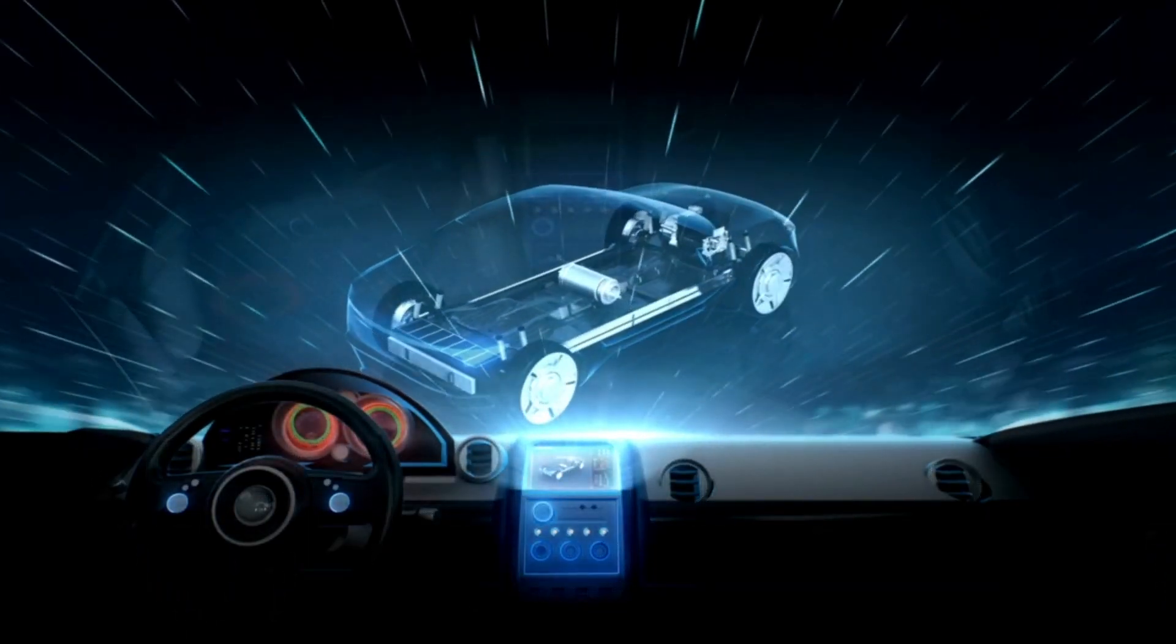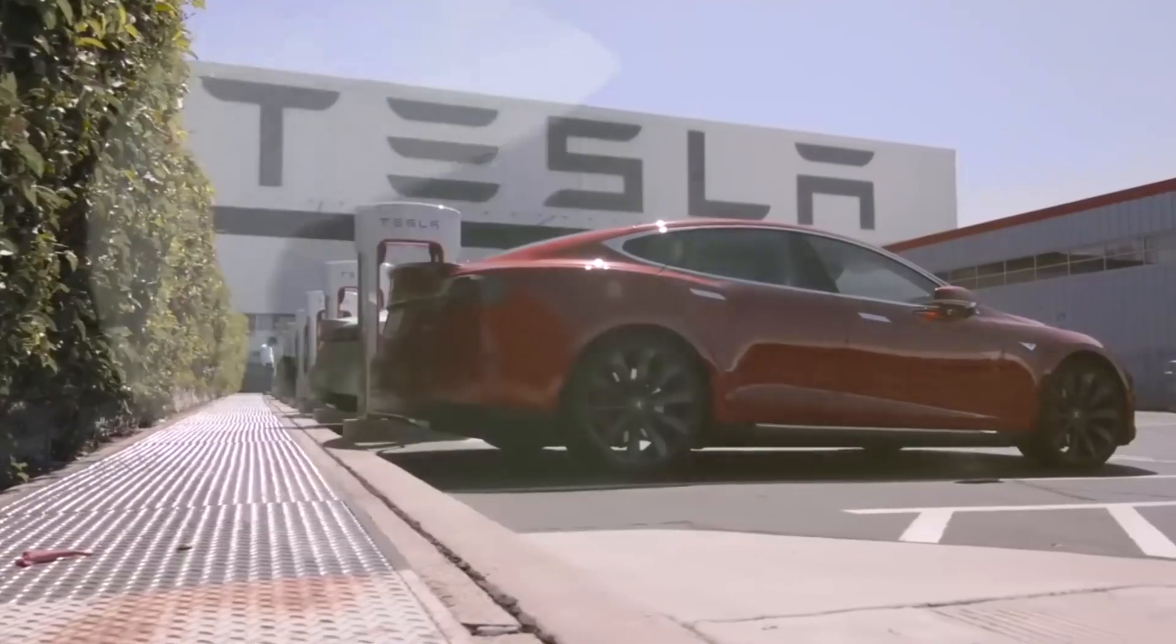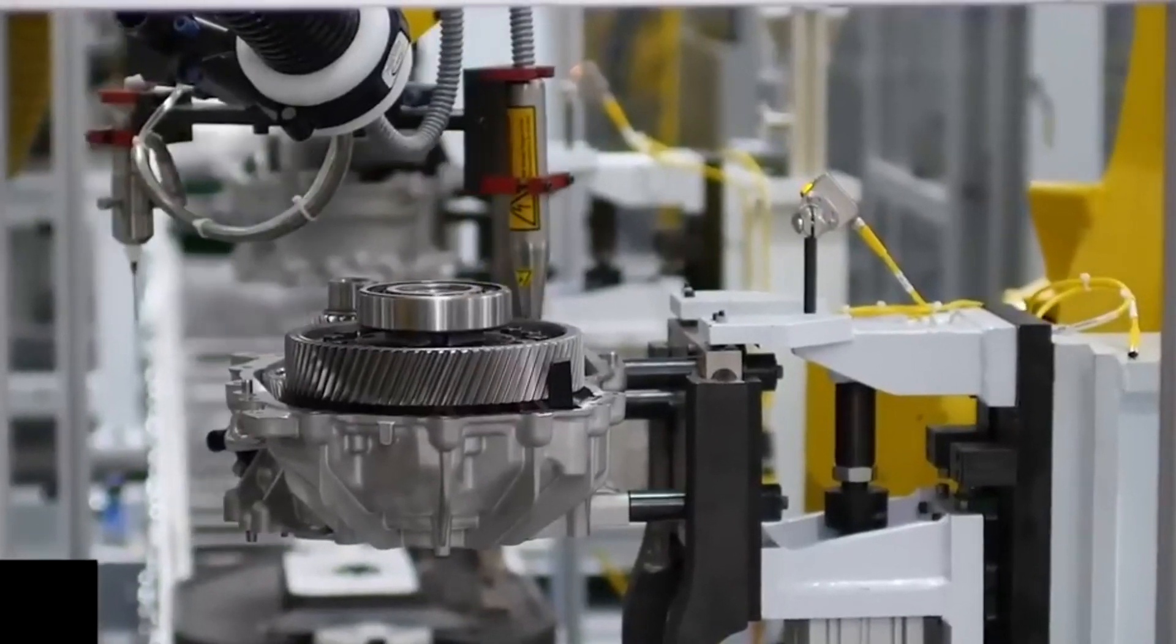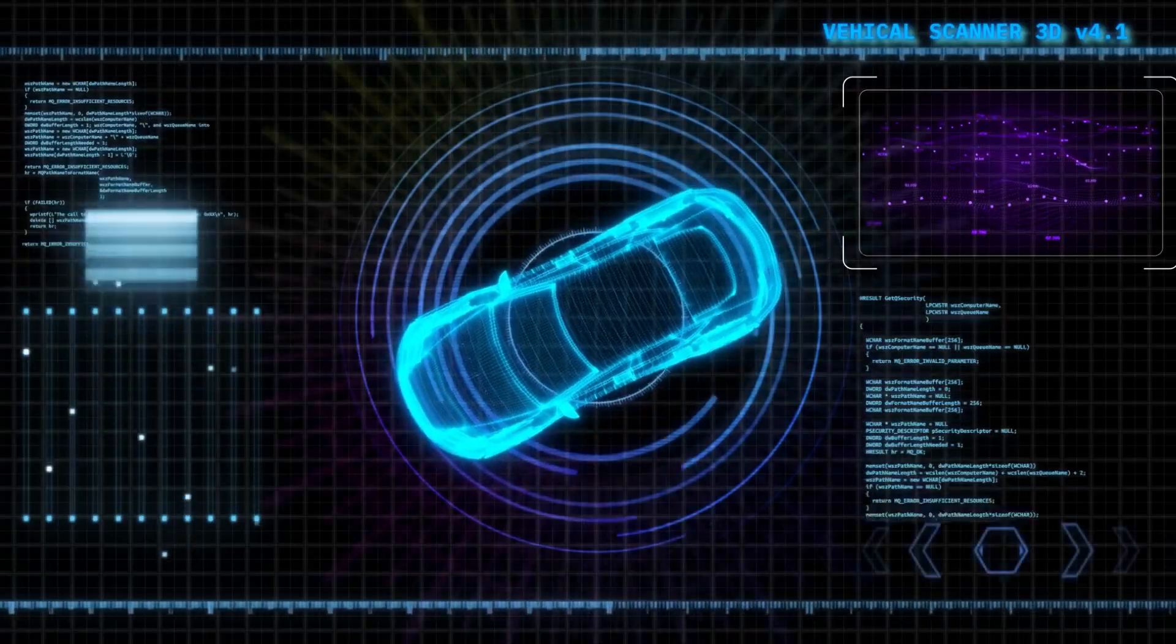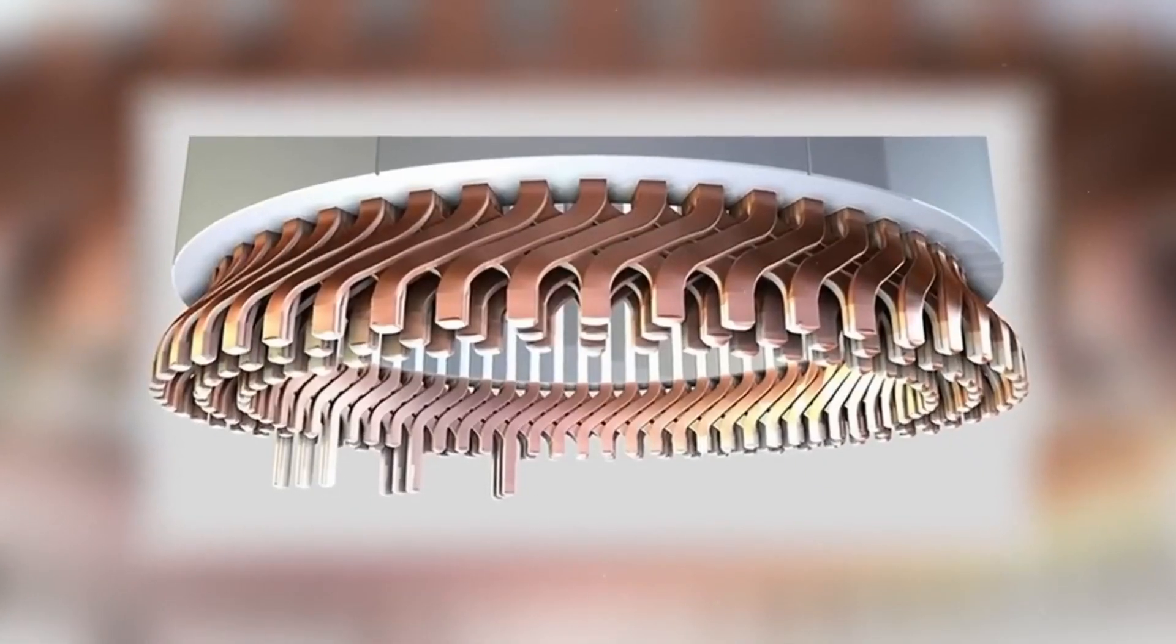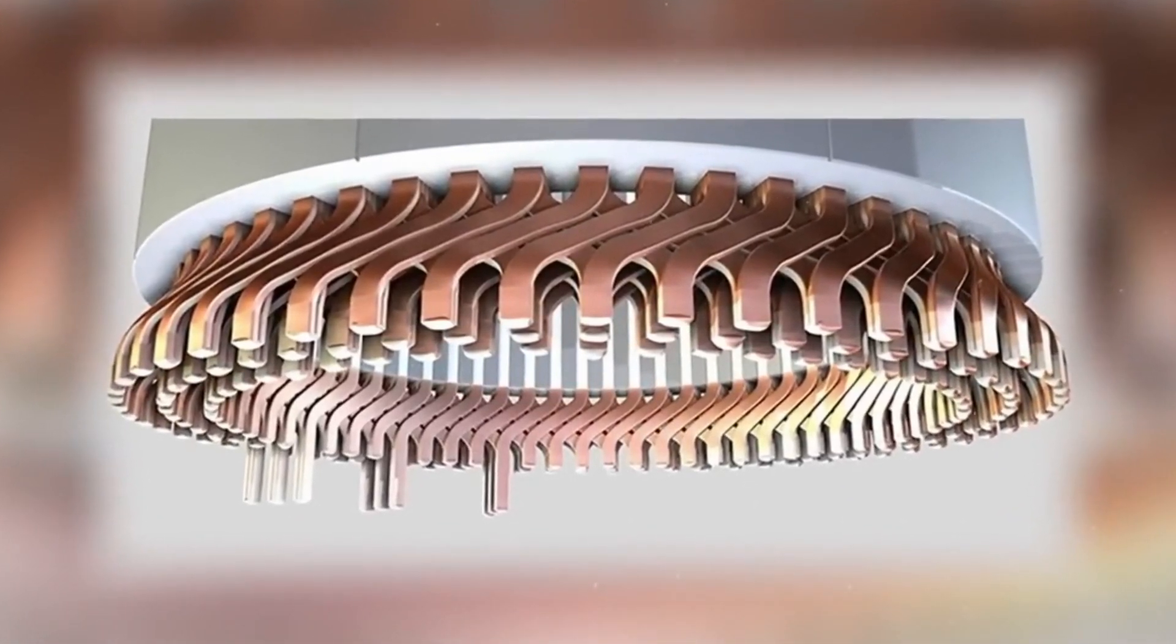The hairpin technology marks a significant breakthrough in the electric vehicle industry, with the potential to shape its future. This technology is transforming the electric motor industry by delivering higher power density in a smaller, more efficient, and cost-effective package. By using flat copper bars instead of traditional round wires, hairpin motors can pack more copper into the same space, increasing power density and fill rate.